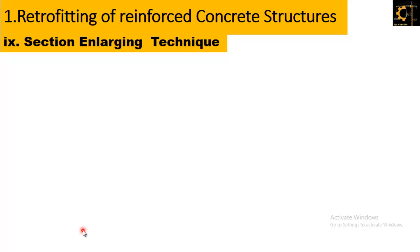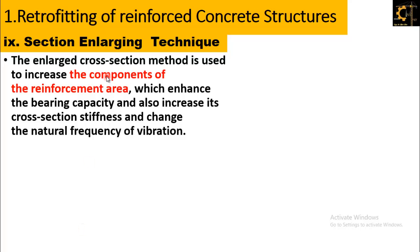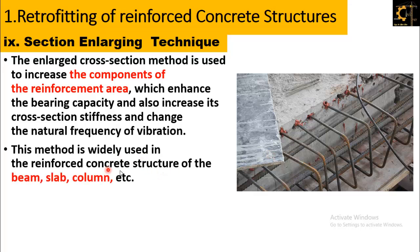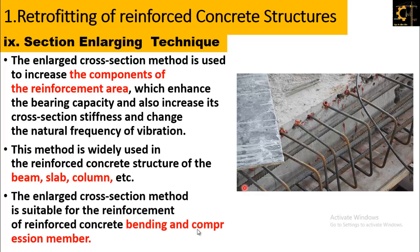The ninth method of retrofitting is the section enlarging technique. The enlarged cross-section method is used to increase the reinforcement area of components, which enhances the bearing capacity, increases cross-section stiffness, and changes the natural frequency of vibration. This method is widely used in reinforced concrete structures for beams, slabs, columns, and similar members. As shown in the picture, the width of a slab is increased by drilling and injecting steel bars, then filling with epoxy to make a better bond between the concrete and steel.